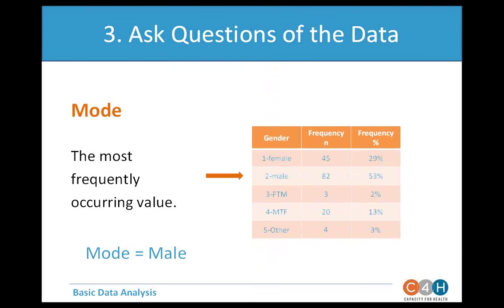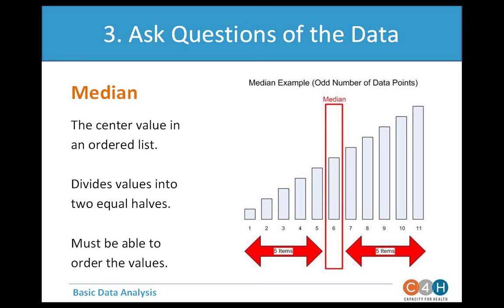The median is the center value in an ordered list. If we line up all values and split them in half, the one in the middle is the median. You must be able to put values in order — you can find the mode for any type of information including gender, but you can't find a median for gender since you can't order it. However, for something like a 'strongly disagree, disagree, agree, strongly agree' scale, you can line up responses meaningfully and find the center value.